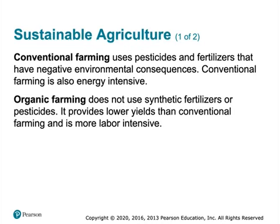Organic farming does not use synthetic fertilizers or pesticides, but it can use mineral fertilizers and non-synthetic pesticides like nicotine — nicotine is a wonderful pesticide but also very toxic. Organic farming tends to have lower yields and is much more labor-intensive. There is some controversy: for example, if you spray pesticides around but not directly on an organic farm, you can still call it organic — 'organic' is a definition.